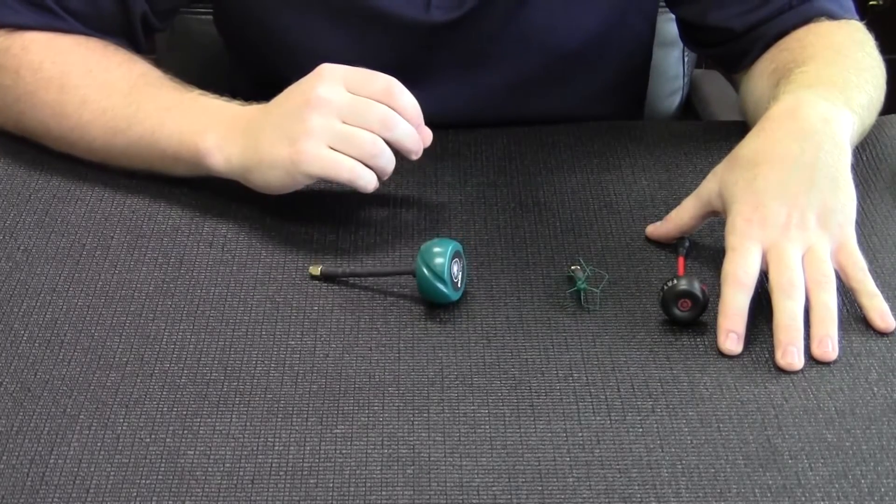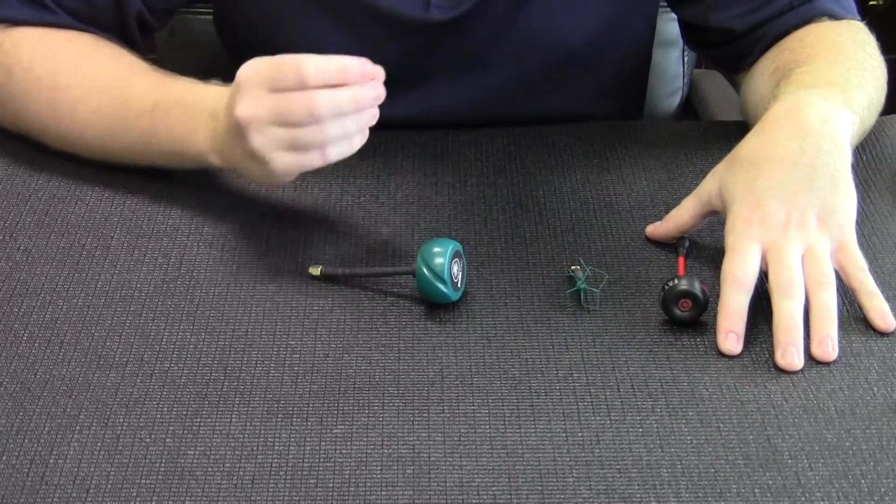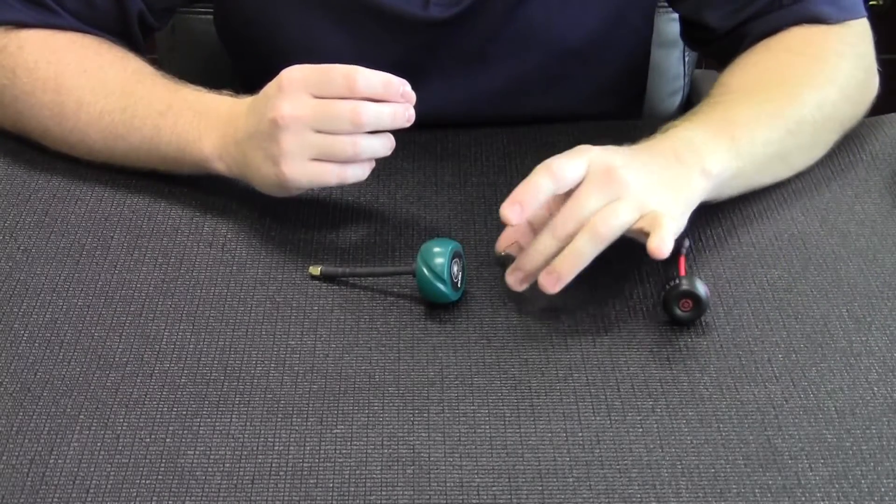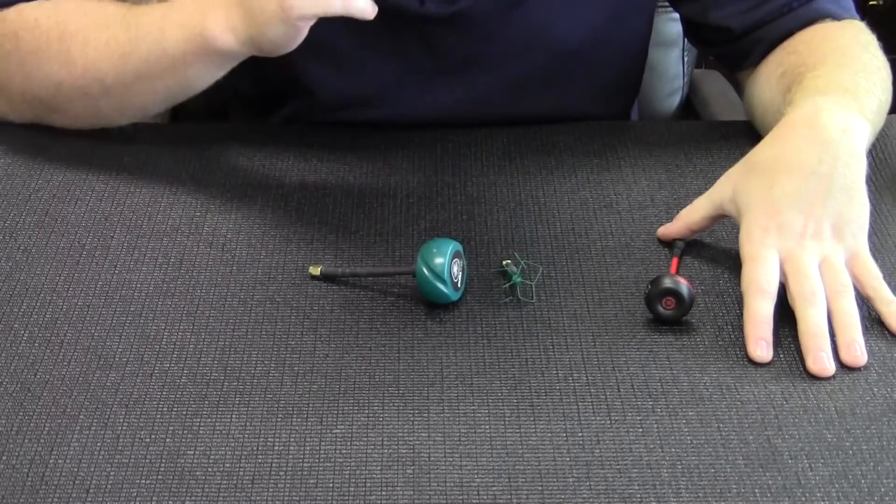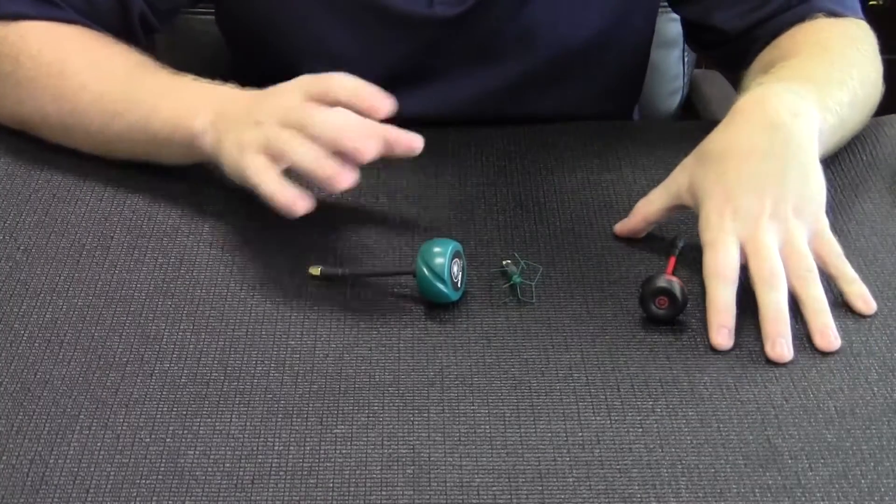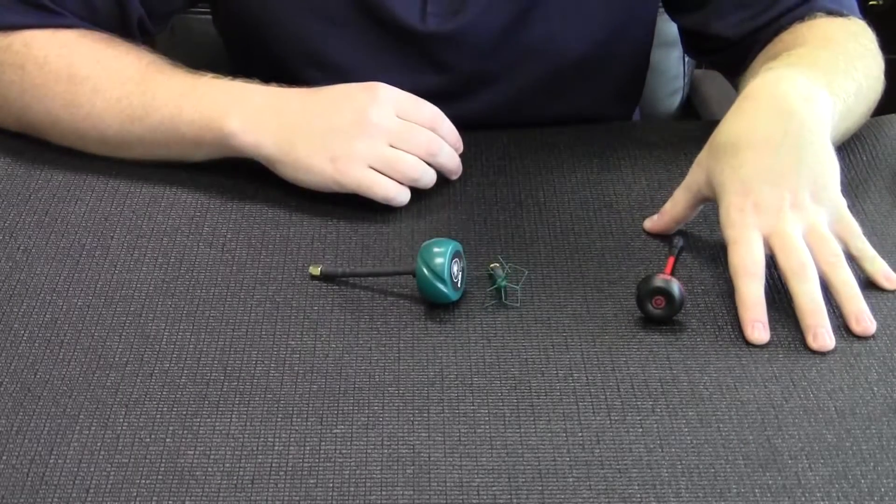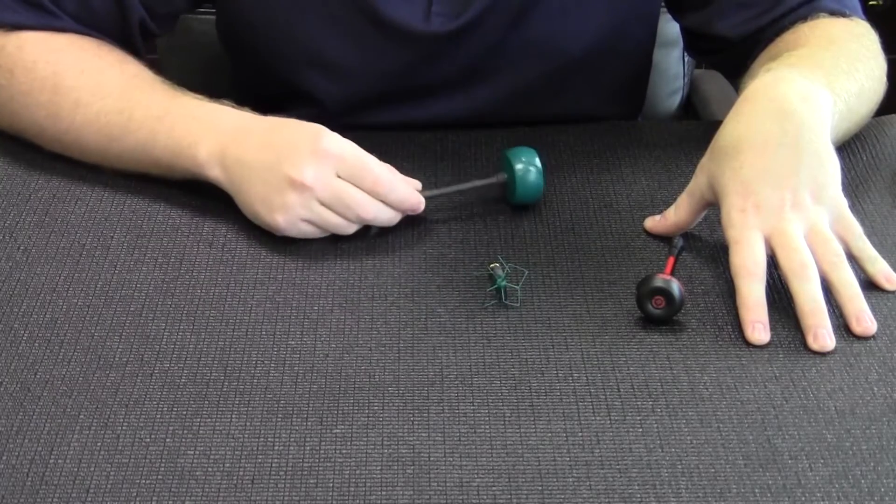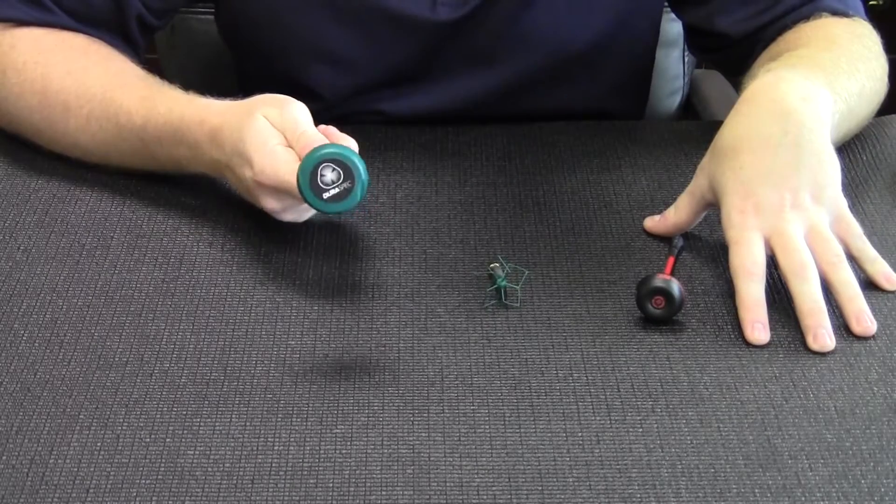That's a large advantage to somebody who tends to crash a lot or somebody who has a setup where the antenna may have a tendency to fall into the propellers. So advantages to both. I tend to run the RaySpec antennas at a race, but if I'm cruising around the backyard or around some trees, I'll run the DuraSpecs when I anticipate crashing or I'm flying in a more harsh environment.